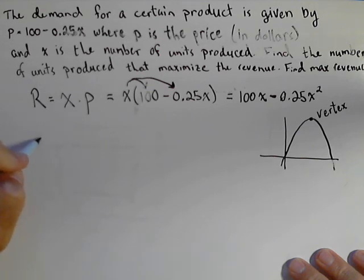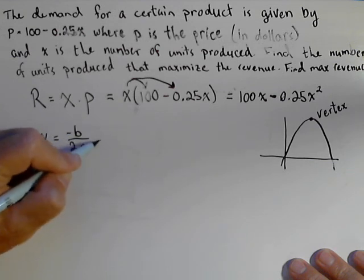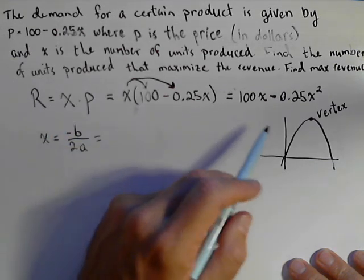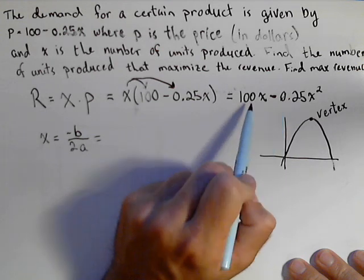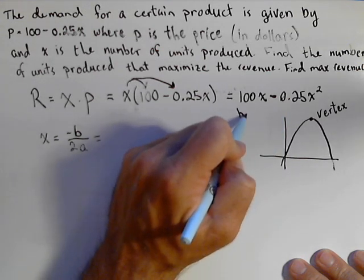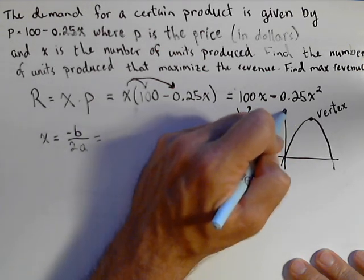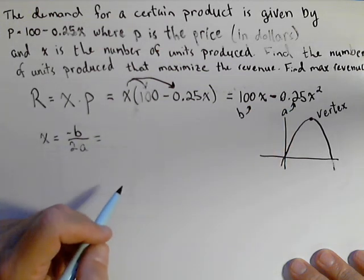To find the vertex of a quadratic, to find the x-coordinate, all you need to do is use -b/(2a). Now, our quadratic is not written in our regular form, so realize that the b is 100 and the a is -0.25.